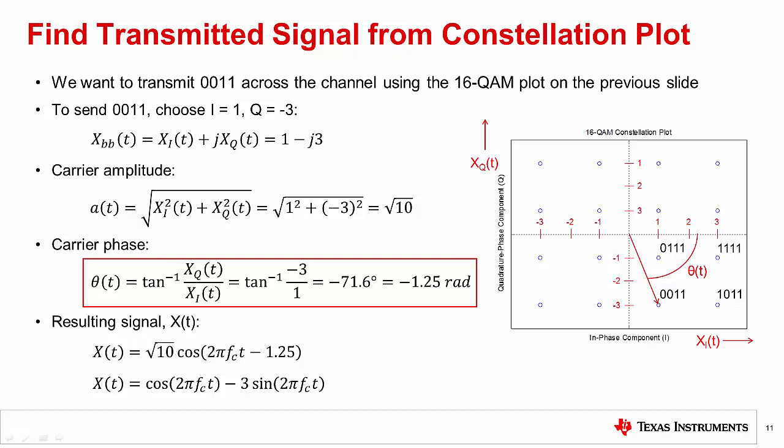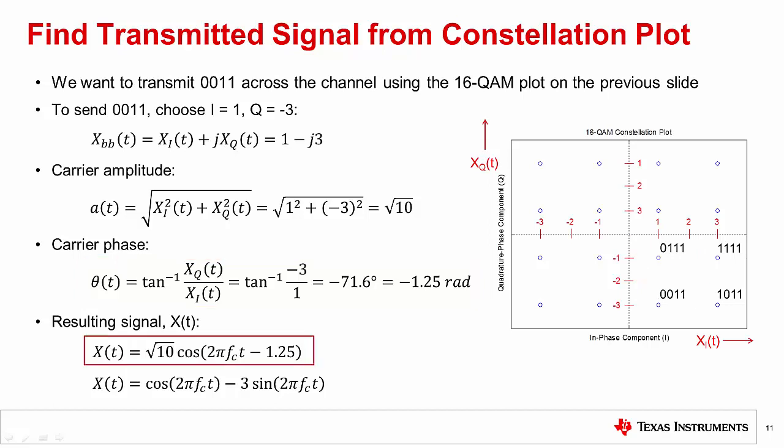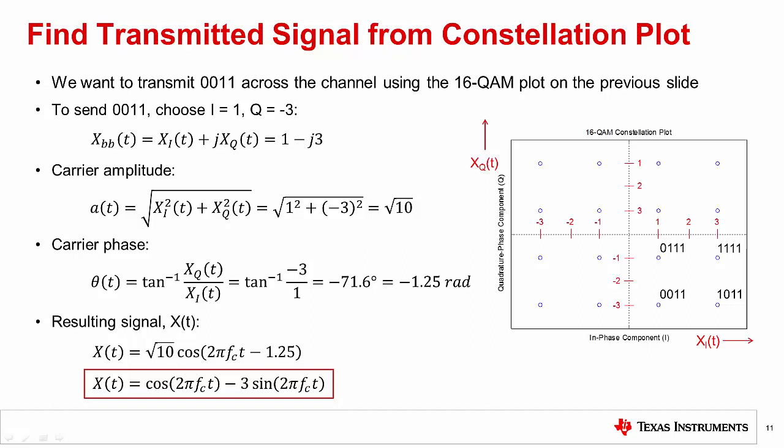Now we can generate the modulated signal in two ways. We could use the calculated amplitude and phase to set the amplitude and phase of the cosine wave as shown by the top equation. Or we can use the I and Q values directly from the constellation plot to set the relative amplitudes of the independent cosine and sine terms as shown by the bottom equation. The resulting signal is the same; however, the second method is the one often used as it is easier to implement in a digital processor or FPGA.